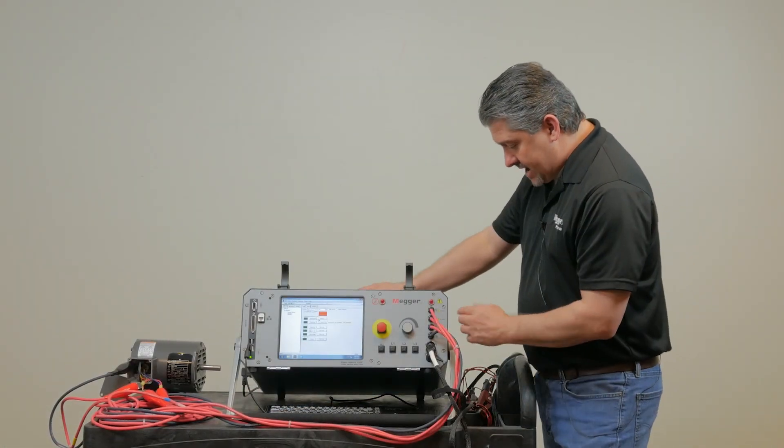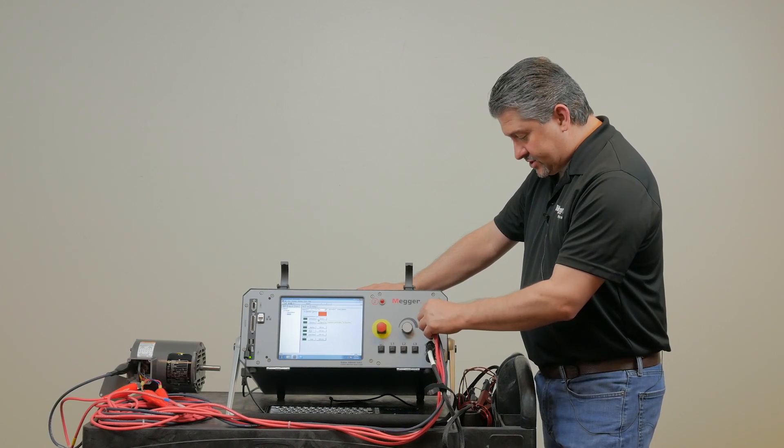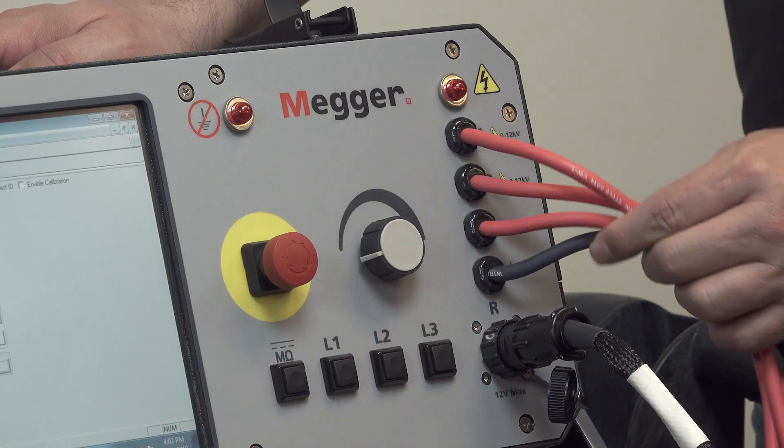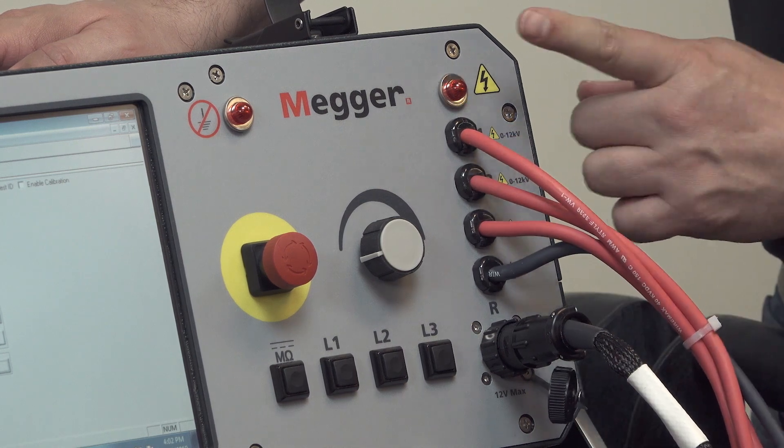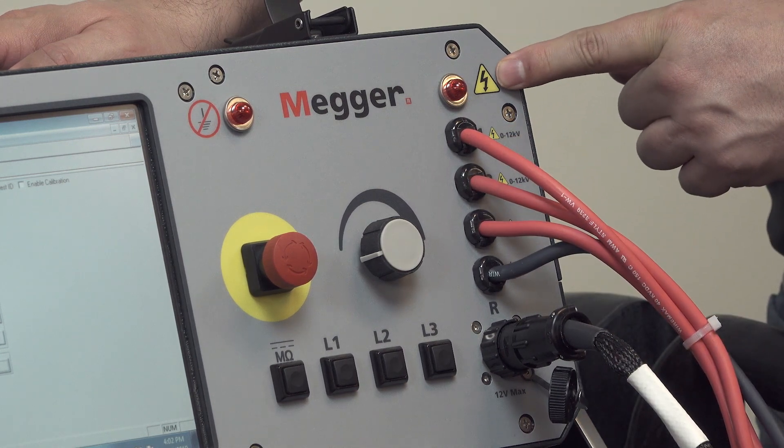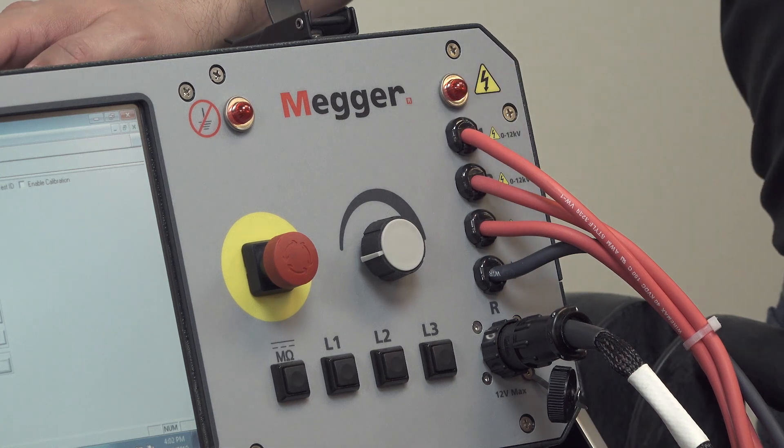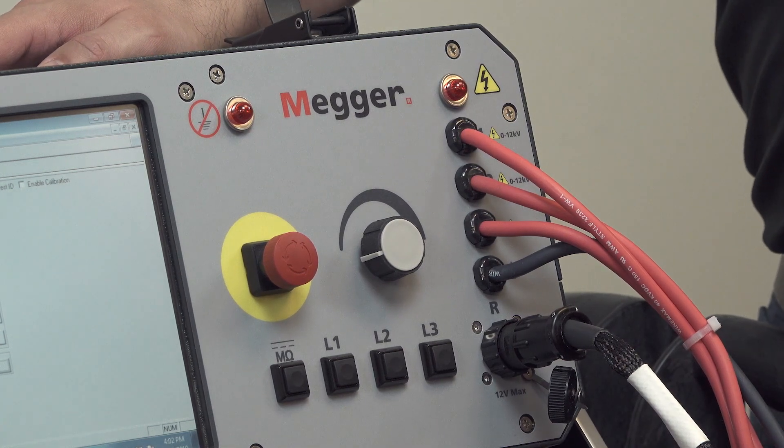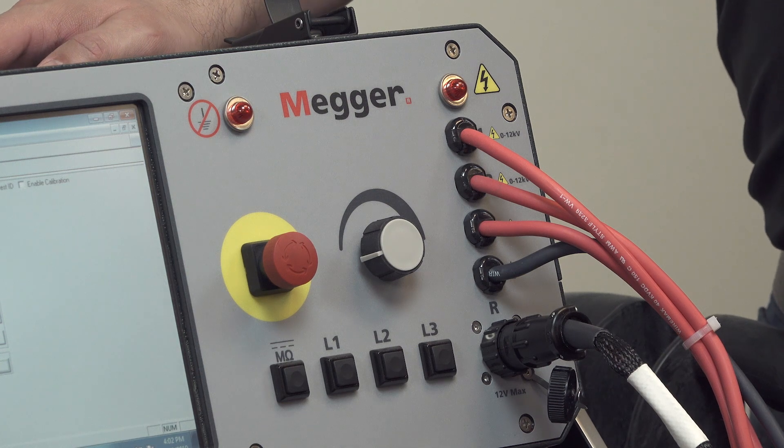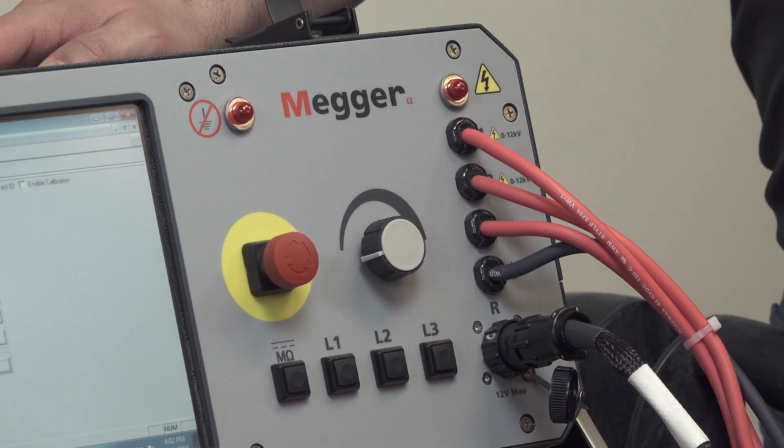Of course on the right we have our three high voltage leads labeled one, two, and three, and we also have a ground lead. Above that we have the high voltage leads energized indicating light, which will illuminate during high voltage testing: Mega, PI, DC high pot, step voltage, and surge testing.